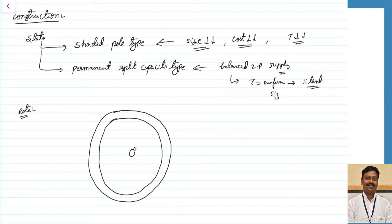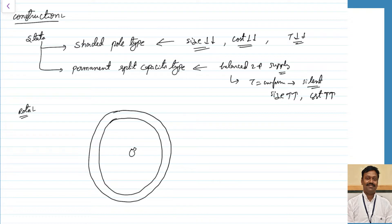The disadvantage of the permanent split capacitor type is that because we have to install the capacitor and all the setup, the size increases and so the cost increases. In applications where you want complete silent operation like recorders, we go for the permanent split capacitor type. Wherever you want to go for timing devices where a little bit of sound does not matter, there you can go for the shaded pole type construction.